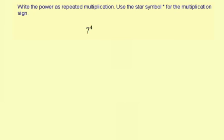So our base is seven, that means we're repeatedly multiplying by seven, and the exponent is four, that means you're going to have four sevens multiply together.